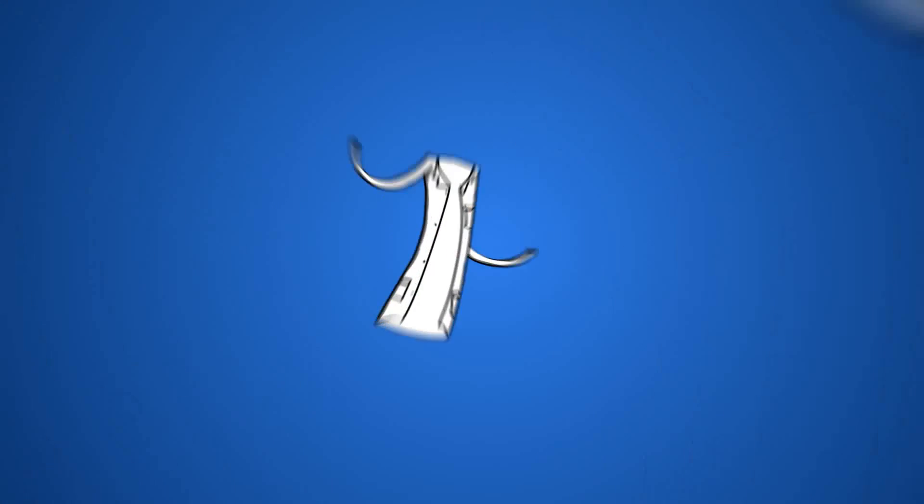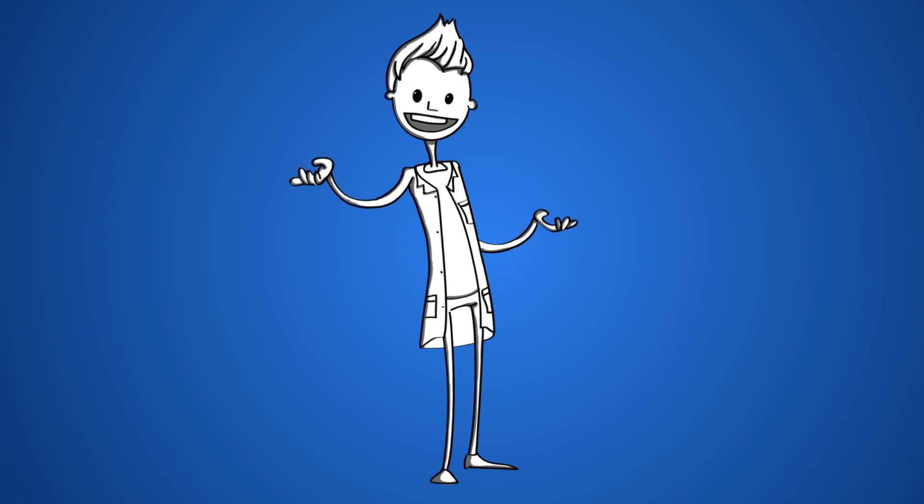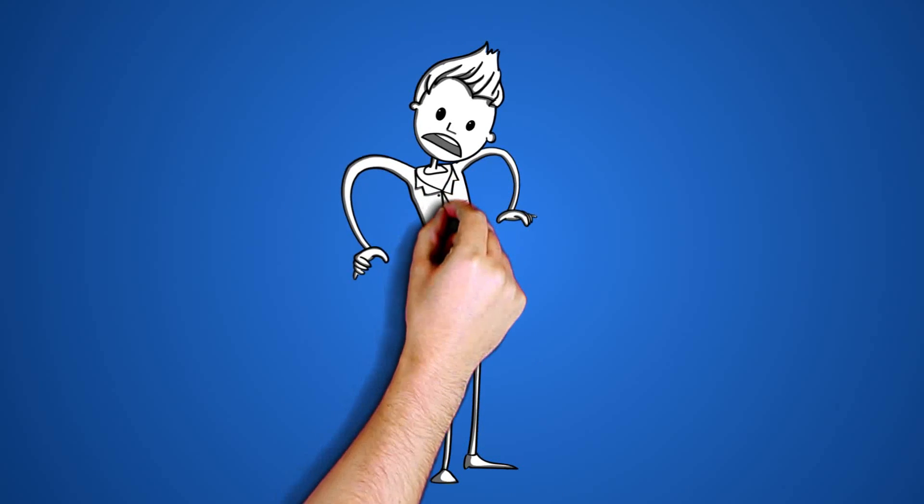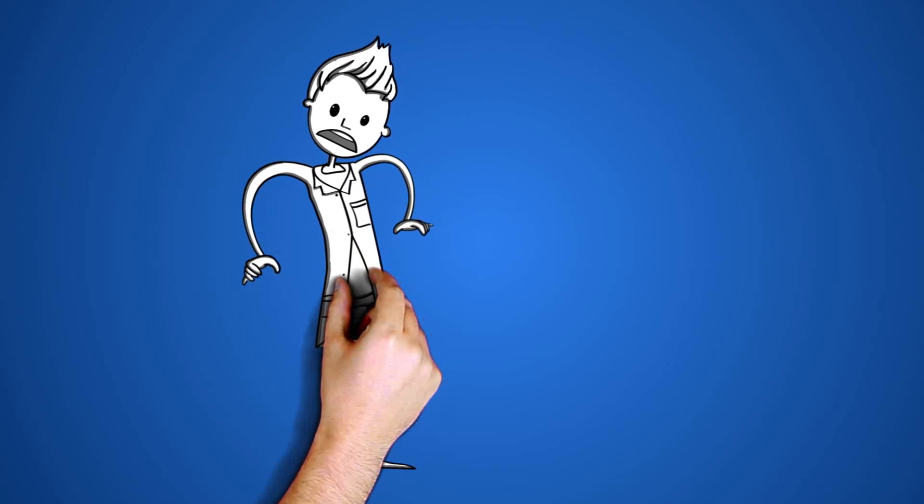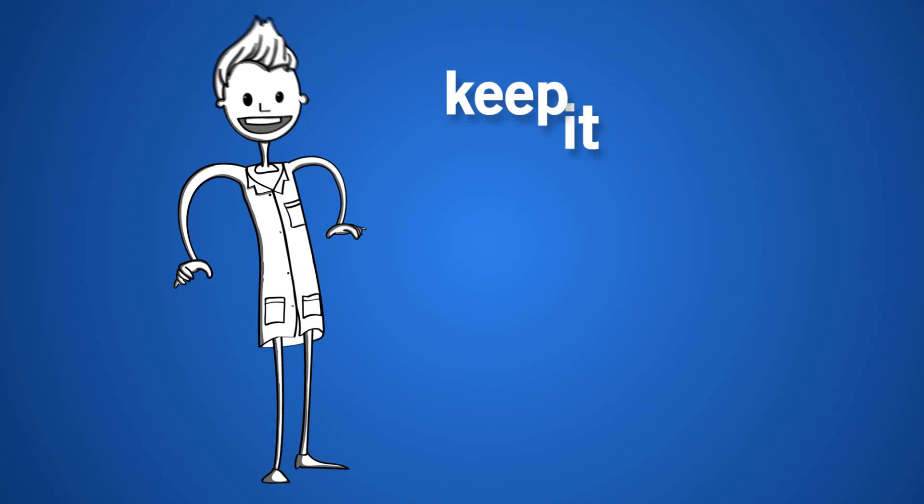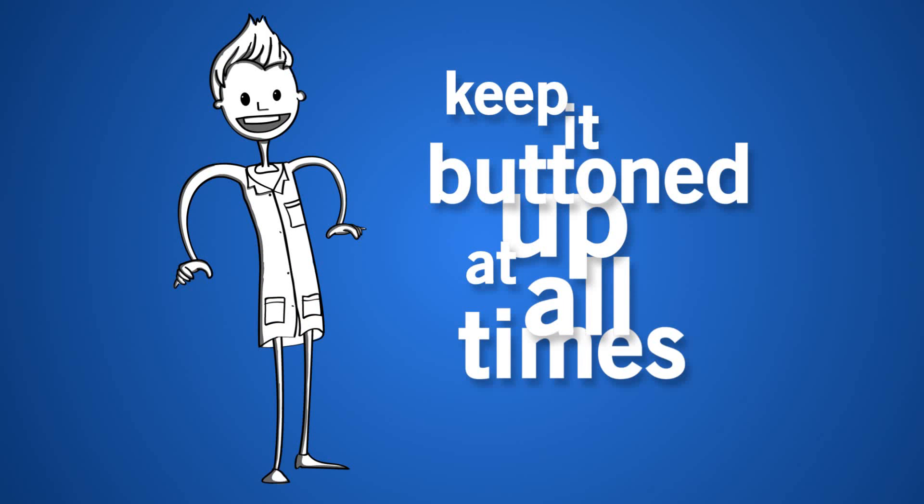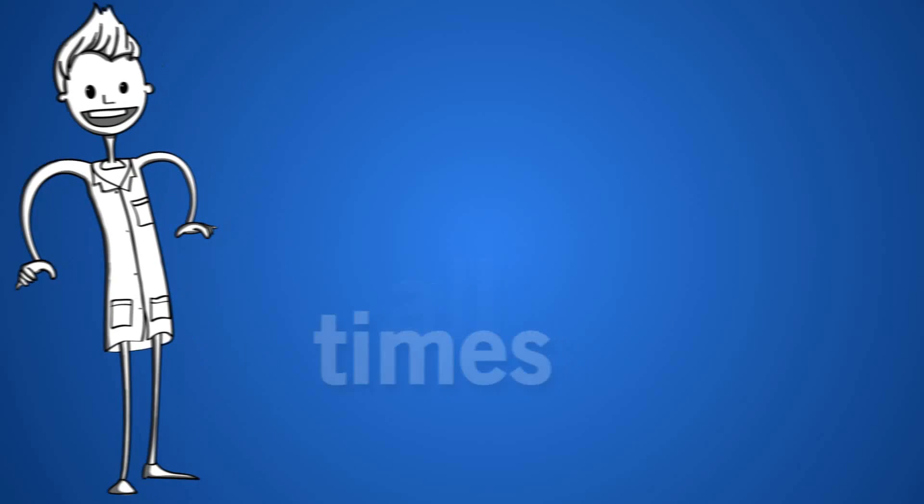First up, the iconic lab coat, which not only makes you look like a real scientist, just like the ones on TV, but also serves to protect your clothing and skin. Keep it buttoned up at all times, but remember not to wear it in clean spaces, such as offices or write-up areas.